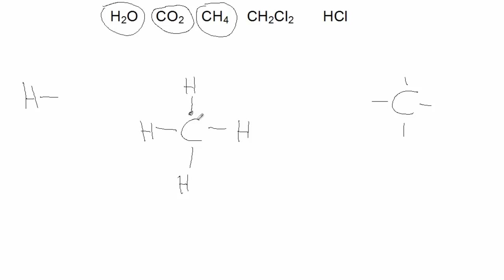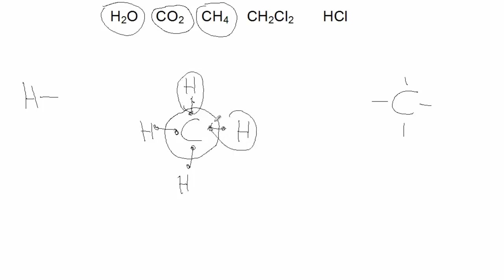Carbon brings four of its electrons — four in its valence shell — and picks up one, two, three, four from the hydrogens. Hydrogen brings one each and picks up its second when it shares with carbon.